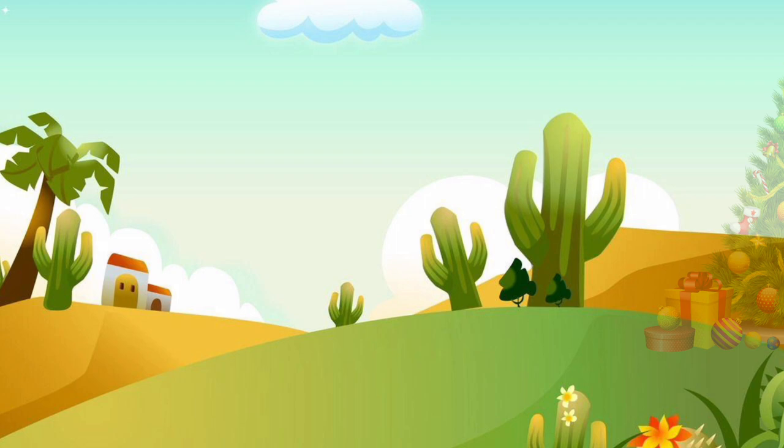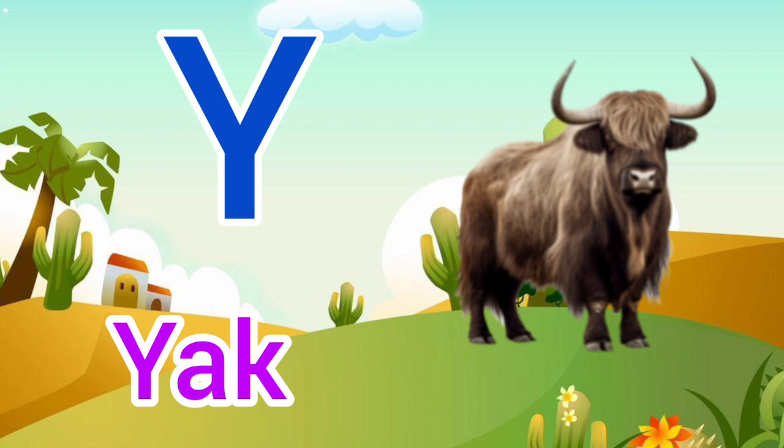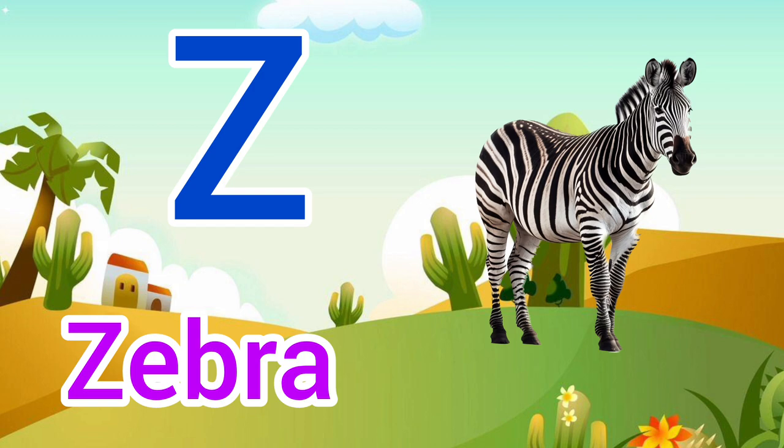Y. Y for Yak, Yak means Pahadi Saand. Z. Z for Zebra, Zebra means Chittidhar Ghora.